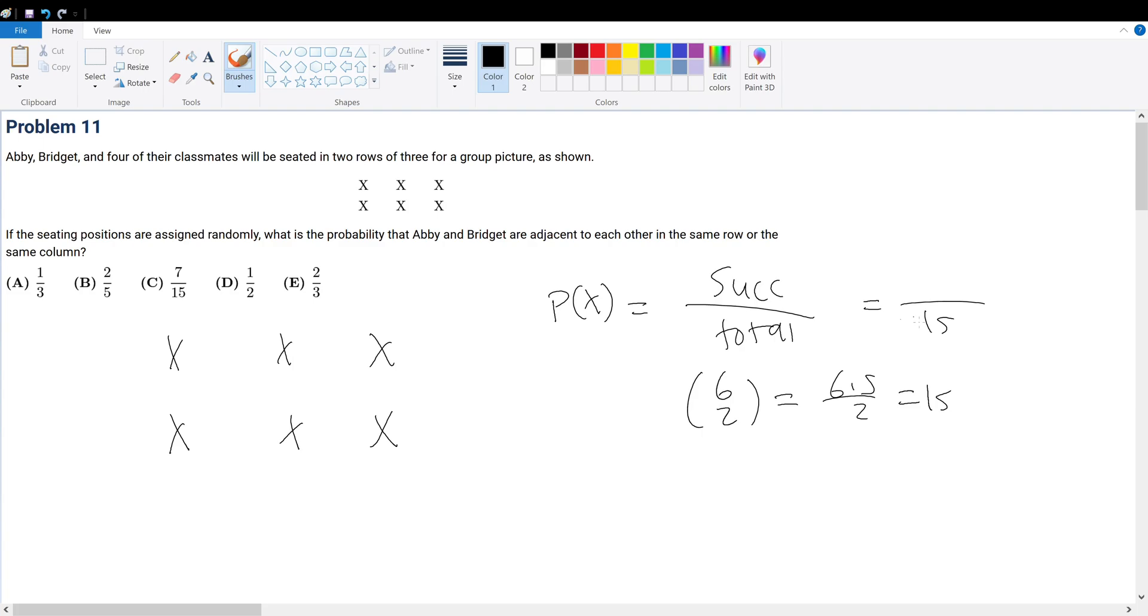Now, what about the number of successes? They have to be in the same row or column. How many ways are there? If I have a row, I can only have this possible pairing or this possible pairing.